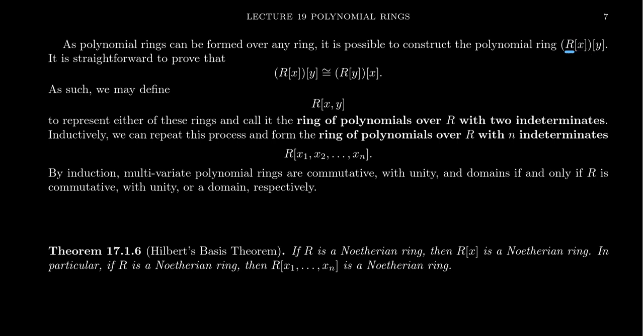So we could adjoin a second variable Y to the ring RX. And it is straightforward to prove that the polynomial ring with the variable Y, whose coefficient ring is the polynomial ring R adjoined X, is isomorphic as a ring to the polynomial ring where your indeterminate is X and your coefficient ring is R adjoined Y. I'm going to leave it as an exercise to prove that these two rings are isomorphic.